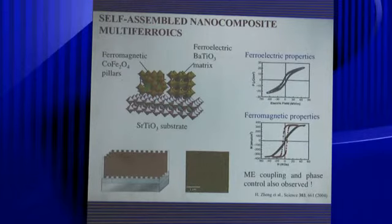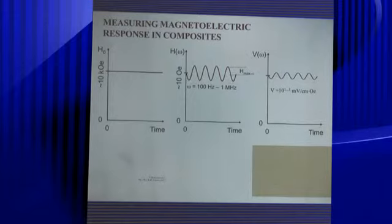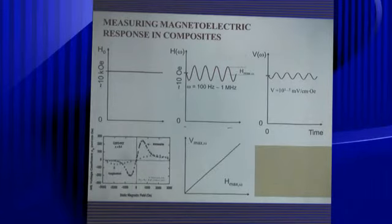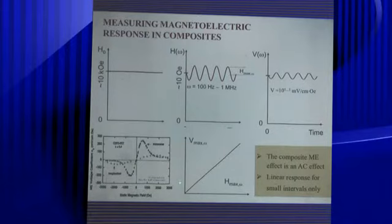How do you measure the magneto-electric effect in these materials? Because it is an extrinsic effect, not intrinsic. When you apply a DC field — for example, 10 kHz — with a constant bias field and an AC frequency of 100 Hz or 1 MHz, the amplitude of the AC signal produces a voltage with a time dependence. An interesting transverse magneto-electric effect and longitudinal electric effect were observed. The composite magneto-electric effect is an AC effect representing a linear response in very small field intervals.